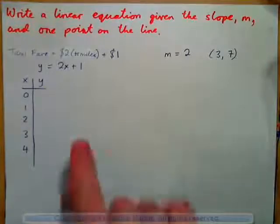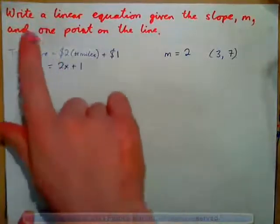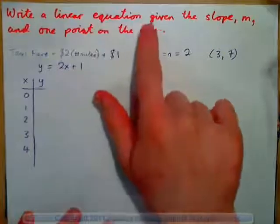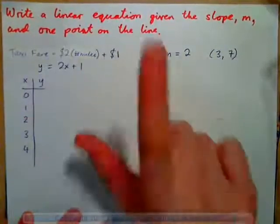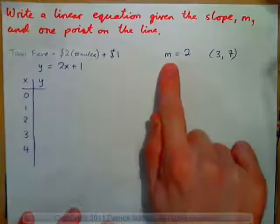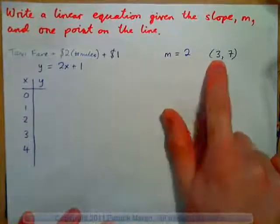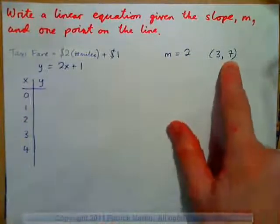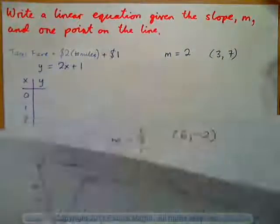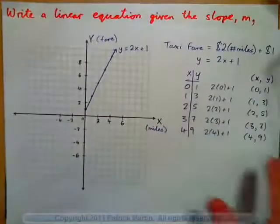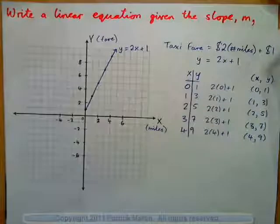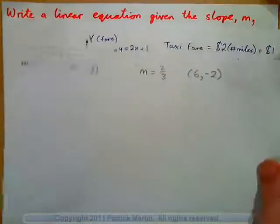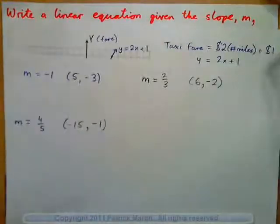In this video, we're going to write a linear equation when you're given the slope m and one point on the line. For example, m equals 2, the point (3, 7) — find the equation. We'll explore a real-life example with a taxi fare that is easy to understand. Then we'll do two more examples just like your text homework.